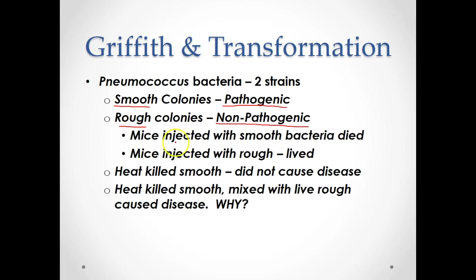Griffith started by injecting the smooth colony bacteria, which are pathogenic, into mice and found that the mice died. He then did the opposite — injected mice with rough colonies — and the mice lived. This proved that the smooth strain is pathogenic and the rough strain is harmless, which is exactly what we would expect. He then took it one step further and heat-killed the smooth pathogenic strain.